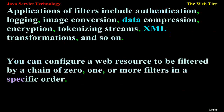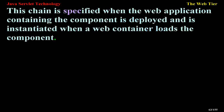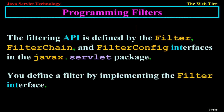Applications of filters include authentication, logging, image conversion, data compression, encryption, tokenizing streams, XML transformations, and so on. You can configure a web resource to be filtered by a chain of 0, 1, or more filters in a specific order. This chain is specified when the web application containing the component is deployed and is instantiated when the web container loads the component. Programming filters: the filtering API is defined by the filter, filter chain, and filter config interfaces in the javax.servlet package.